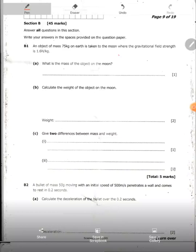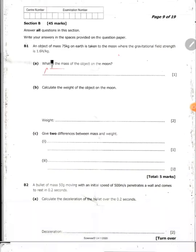an object of mass 75 kg on Earth is taken to the moon where the gravitational field strength is 1.6. What is the mass of the object on the moon? Mass does not change, so the mass still remains 75 kg.